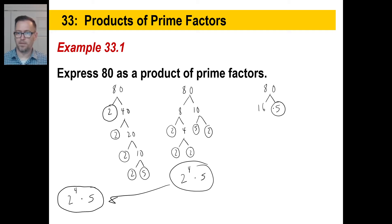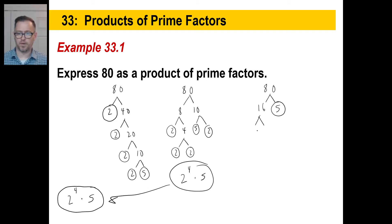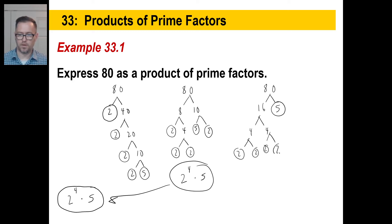It doesn't matter what order you do it in. The 5 is a prime number. For the 16 times 5 branch: 16 breaks into 4 and 4, and each 4 breaks into 2 and 2. So we end up with 2 times 2 times 2 times 2 times 5 — the same thing. It doesn't matter how you do it.